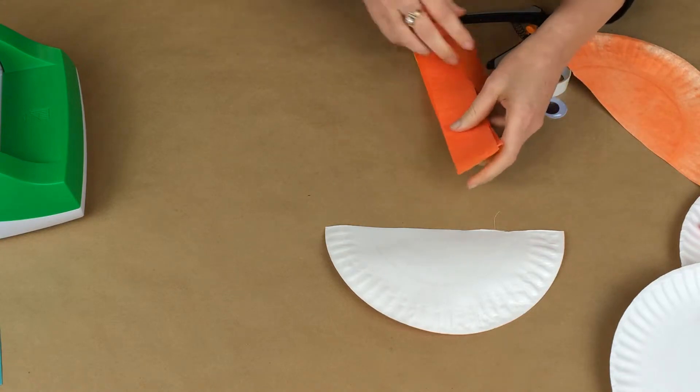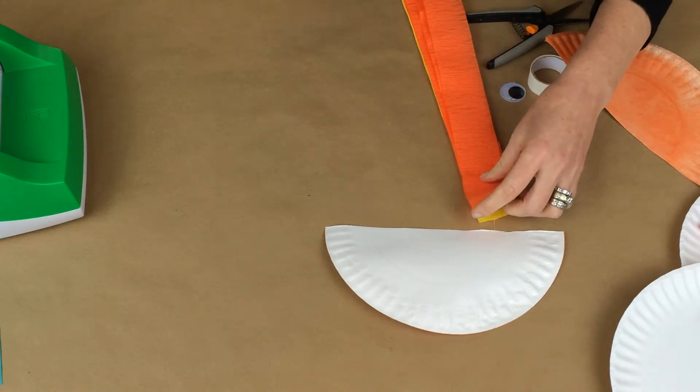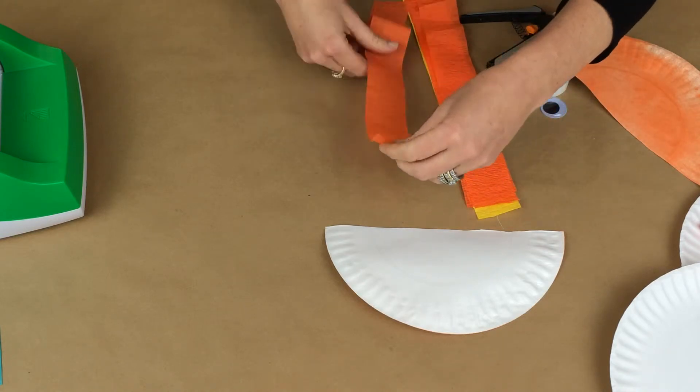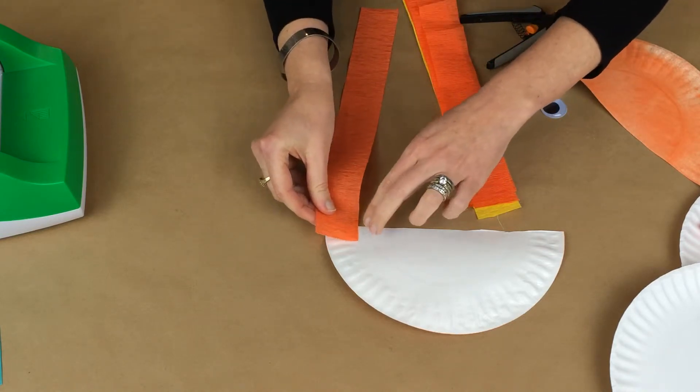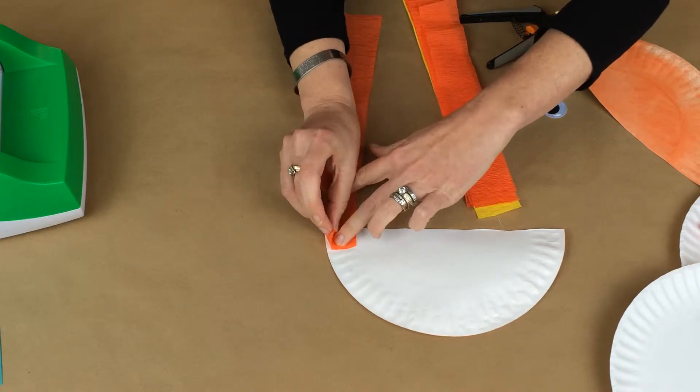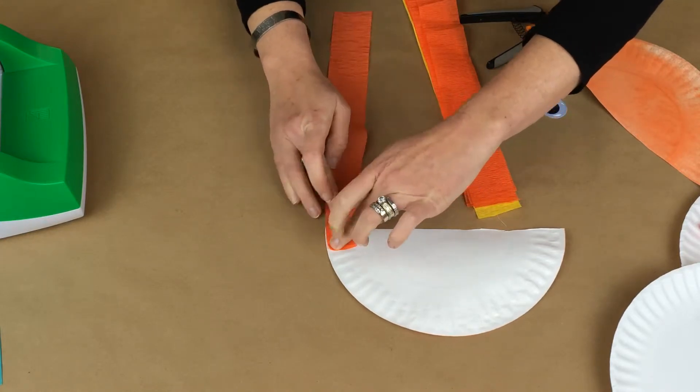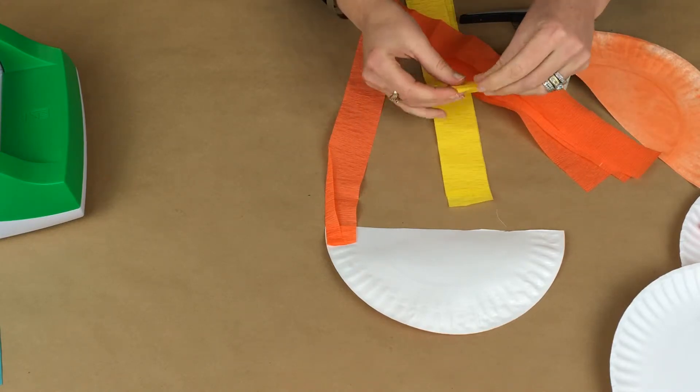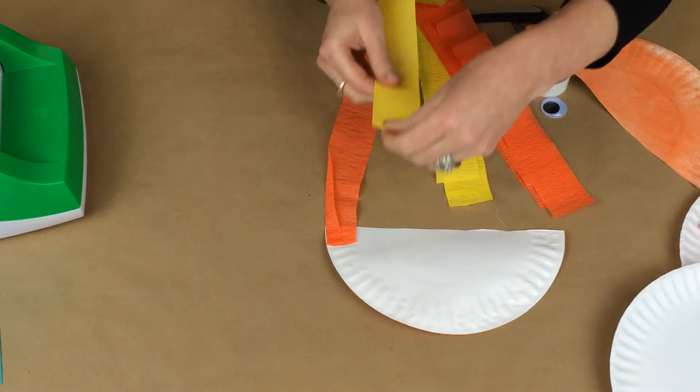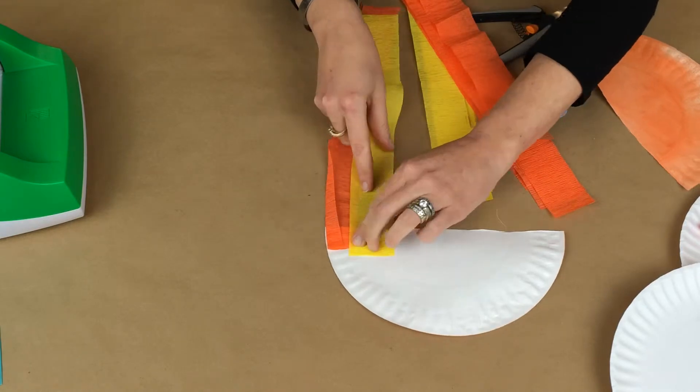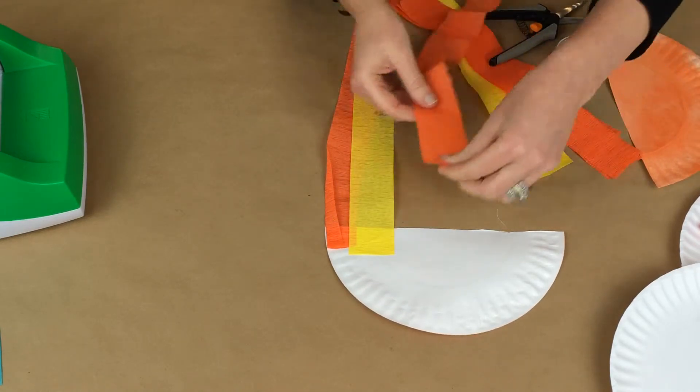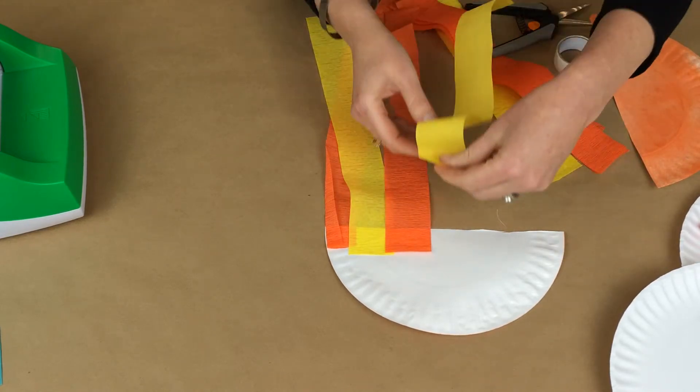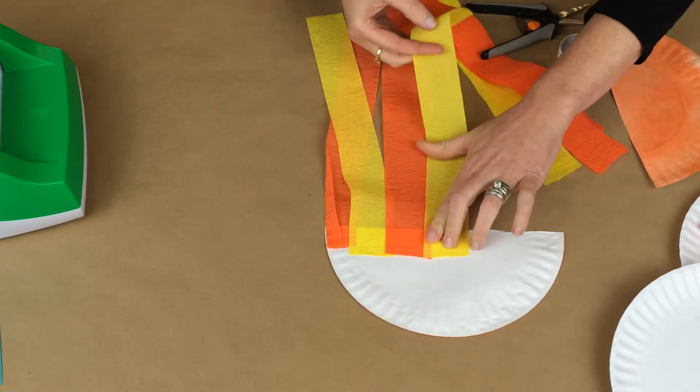I'm just going to take my couple pieces of crepe paper—these are cut to about a foot and I use two different colors. You can use as many colors as you want and you can also make them as long or as short as you want. I'm going to start on the edge and I just like to fold in my end there a little bit, and I'm just going to alternate colors across the jellyfish. I like to overlap mine a little bit and you just need to leave about an inch or so on your jellyfish.